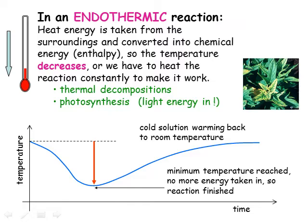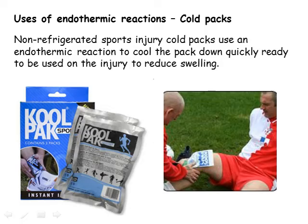The graph here shows how the temperature would change during an endothermic reaction at room temperature. The temperature decreases as the reaction progresses until one of the reactants is used up. Then the reaction finishes and the temperature is at its minimum. After that, the reaction mixture slowly warms up back to the temperature of the surroundings. We encounter endothermic reactions of this kind in the cold packs that are used to treat sports injuries.